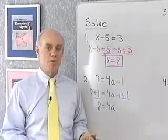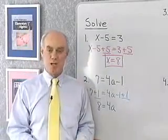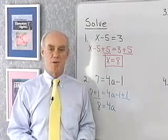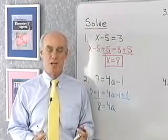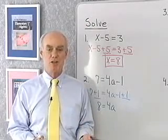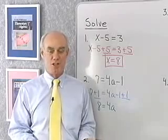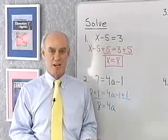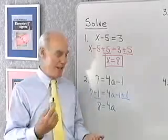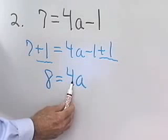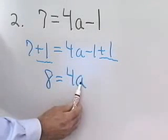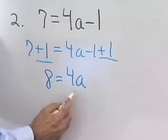That brings me to my second property, which is the multiplication property of equality. It says I'm free to multiply both sides of an equation by the same non-zero number anytime I want, and I won't change the solution. That allows me to take this 4a and replace it with just 1a, so I have a isolated on one side of the equation.